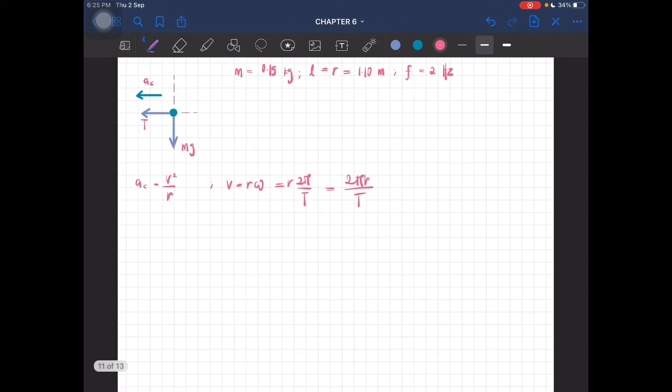Substitute this in. So acceleration is equal to—no, what is this first? So v is equal to 13.8 meters per second. Okay, so 13.8 squared over r, which is 1.1, you then get the centripetal acceleration to be equal to 173 meters per second squared.